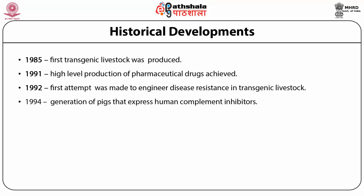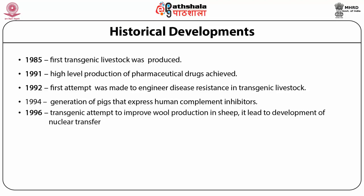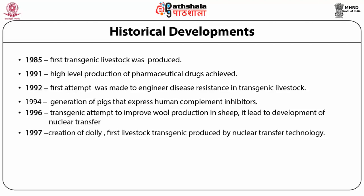In 1994, generation of pigs that can express the human complement in vitro was done. In 1996, transgenics attempts to improve wool production in sheep led to the development of nuclear transfer technique. In 1997, a landmark in the history of transgenic animals: the creation of Dolly, the first livestock transgenic produced by nuclear transfer technology. In 2000, the first gene targeting in livestock was produced.